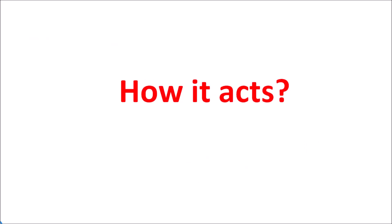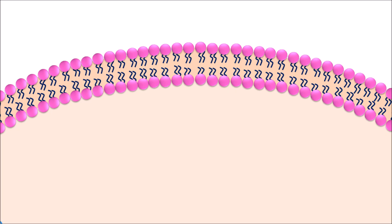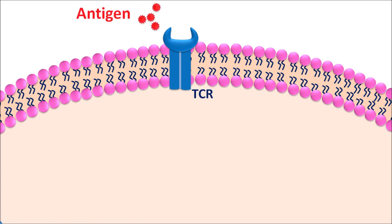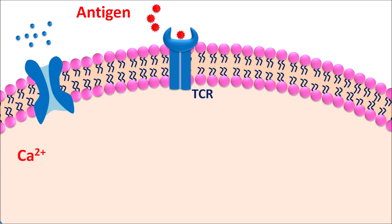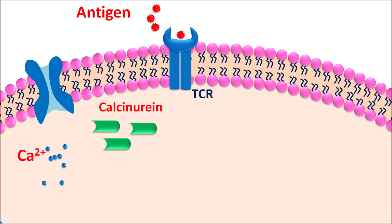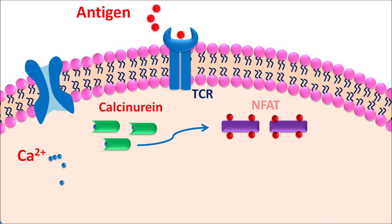Let us see how tacrolimus acts on the T-cell. T-cell receptors are present which are activated when antigen components interact with these receptors. Antigens can stimulate T-cell activity when they bind to the T-cell receptor, activating the calcium ion channel. Calcium then enters into the T-cells, which activates T-cell proliferation. One of the targets for this calcium is calcineurin.